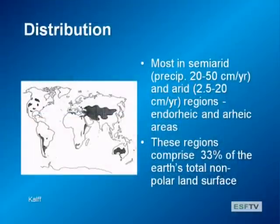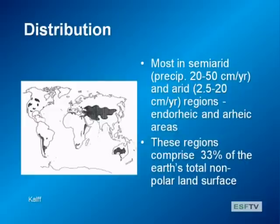Saline lakes have some really unique qualities, unique ecological characteristics, and unique environmental issues. So let's talk about where saline lakes are. If you remember back to the hydrologic cycle, there are some parts of the planet where we have more arid conditions and where rivers don't flow to the sea. Most of our saline lakes are found in these semi-arid regions where you get about 20 to 50 centimeters per year of precipitation. Some are in arid regions, although it can be hard for them to persist there. These are the endorheic areas—where rivers arise but don't flow to the sea—and the arheic areas where there may just be temporary rivers during flooding. Together these are a substantial portion of the planet—about one-third of the planet's non-polar land surface is in an endorheic or arheic area.